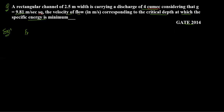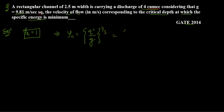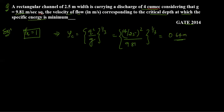We know that at critical depth, the Froude number equals 1. For a rectangular channel, the critical depth formula is: Yc = (q²/g)^(1/3), where q is discharge per unit width. The discharge per unit width is 4 divided by 2.5. Computing this: (4/2.5)² divided by 9.81, raised to power 1/3, gives a critical depth value of 0.64 meter. So Yc = 0.64 m.